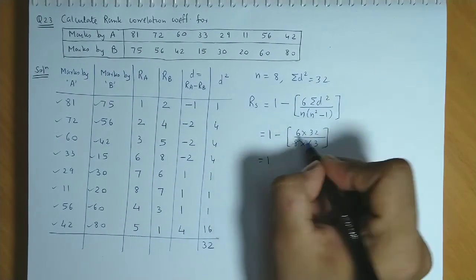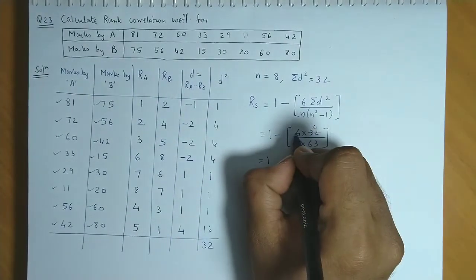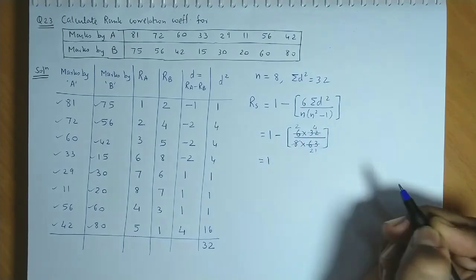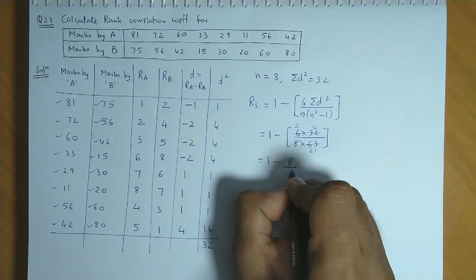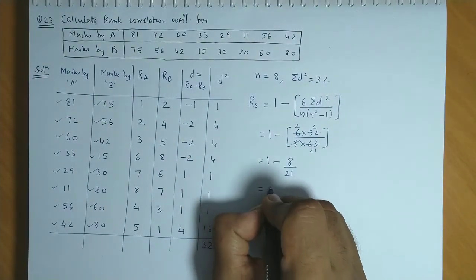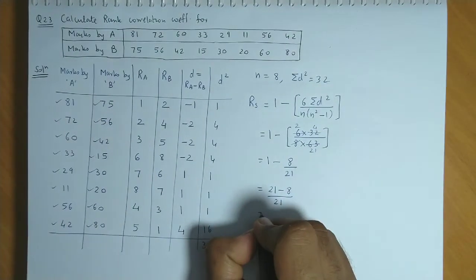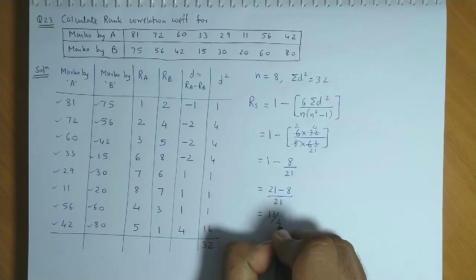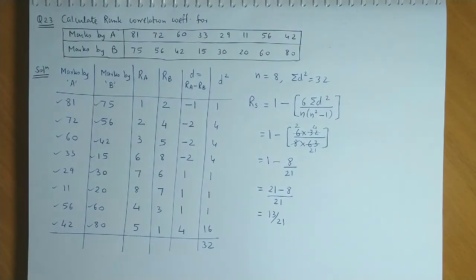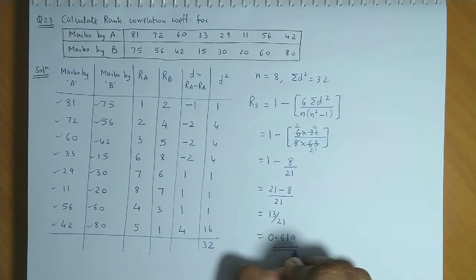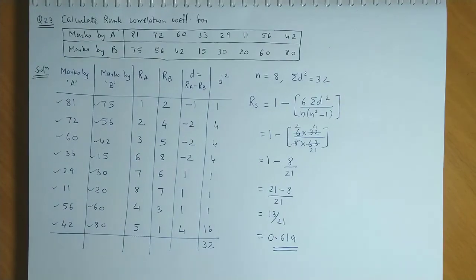Let us simplify this. 8 times 1 is 8, 8 times 4 is 32, 32 divided by 8 is 4. Then 4 times 2 is 8 divided by 21. So we have 21 minus 8 divided by 21. 21 minus 8 is 13, so 13 divided by 21. 13 divided by 21 gives 0.619. So your final answer is 0.619. This is the rank correlation coefficient.